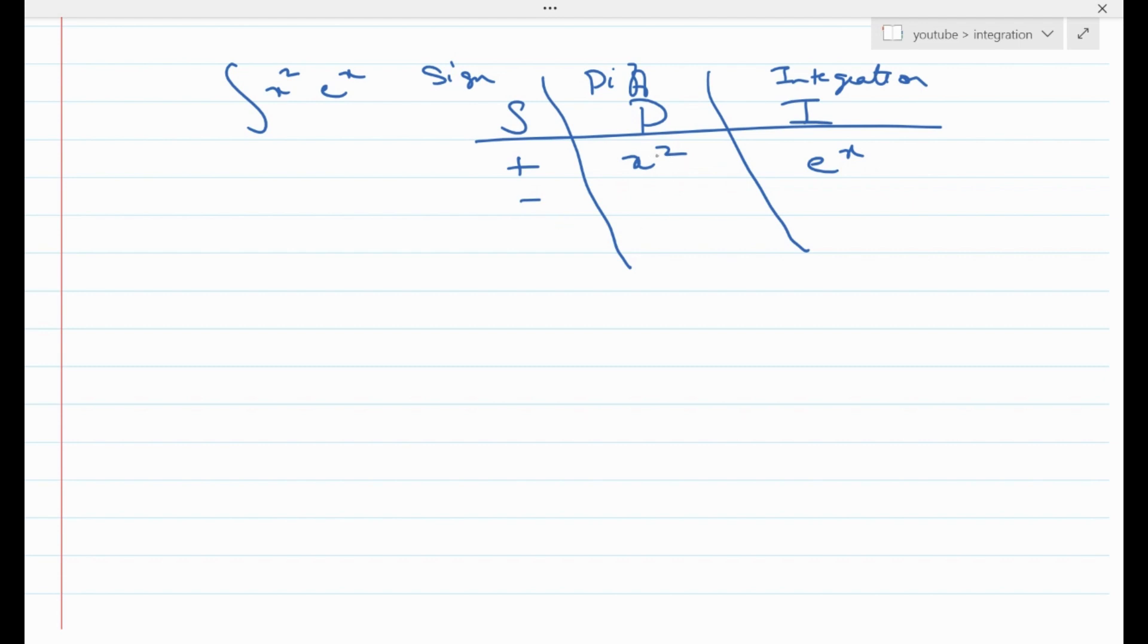So the first thing we are going to do is differentiate the x square term till we get 0. So first derivative would be 2x, second derivative would be 2, finally last derivative is 0.